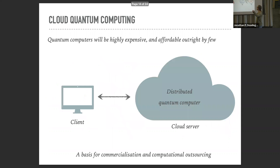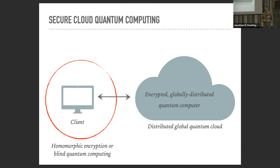That naturally leads to the idea of cloud quantum computing, where most people will access quantum computers through a client-service model. If you're outsourcing valuable computations — whether for IP reasons or national security — you want to be secure about it. You don't want the person doing the calculation to take all your data while processing it. In the classical world we rely on trust when uploading to a supercomputer, but we can do much better in the quantum scenario.